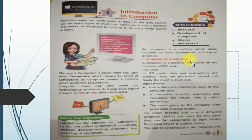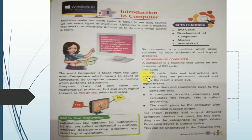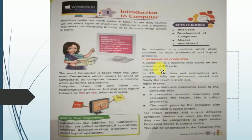The working of a computer is based on a cycle called the IPO cycle. A computer works on the principle of the IPO cycle, where data and instructions are entered, then they are processed and stored, and finally the result is given out. This is called the IPO cycle.